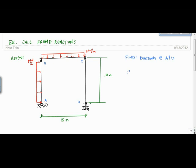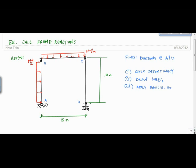So what we're going to do: the first thing you have to do is check determinacy. Then you want to draw your free body diagram, identify your unknowns — that's the whole point. Then apply equilibrium equations — there's going to be multiple — and solve for the unknowns.